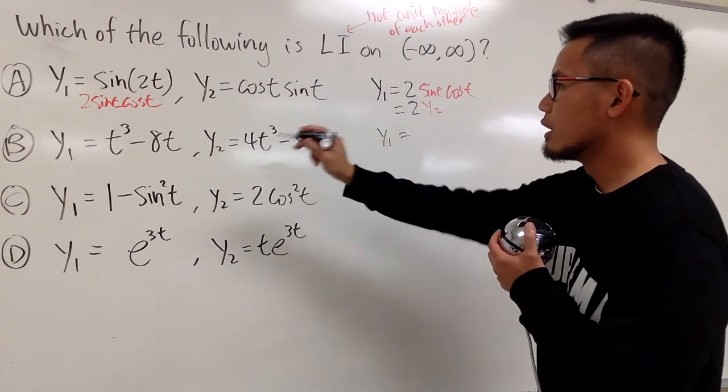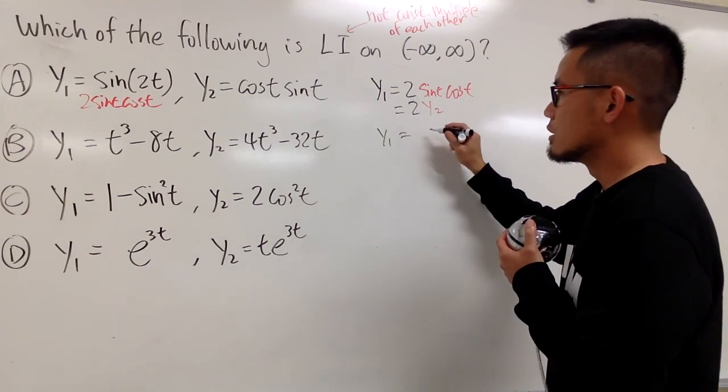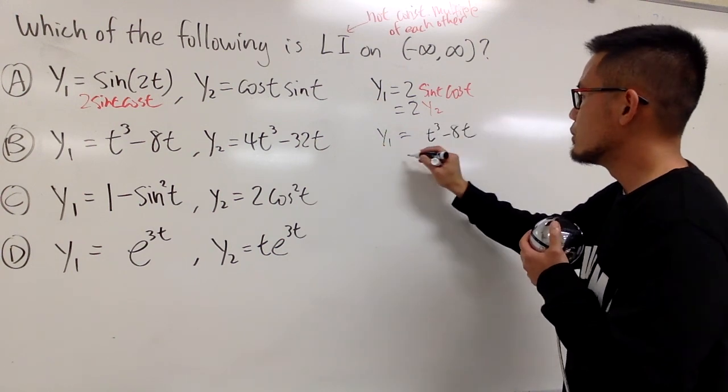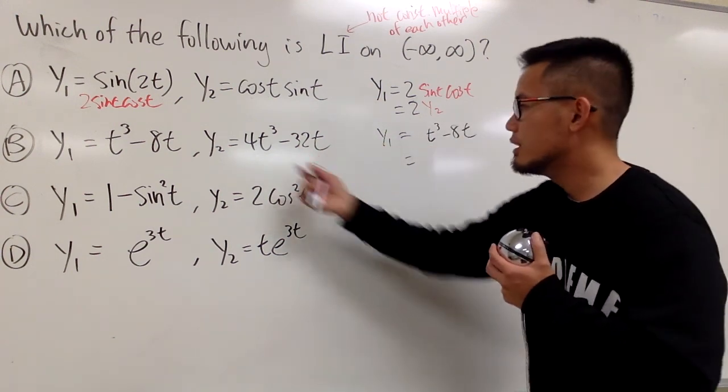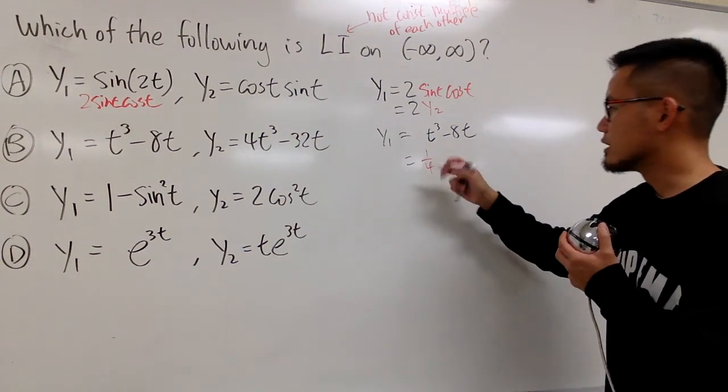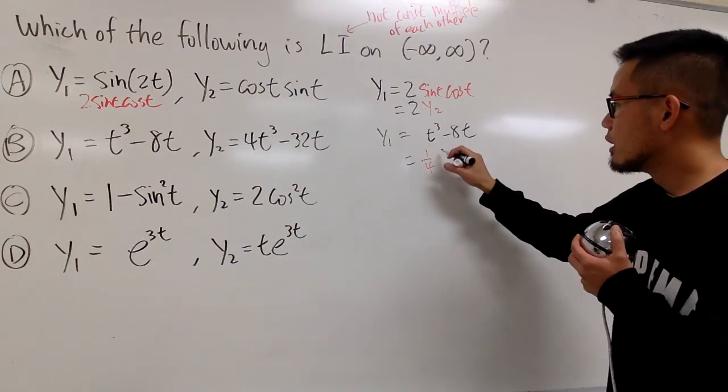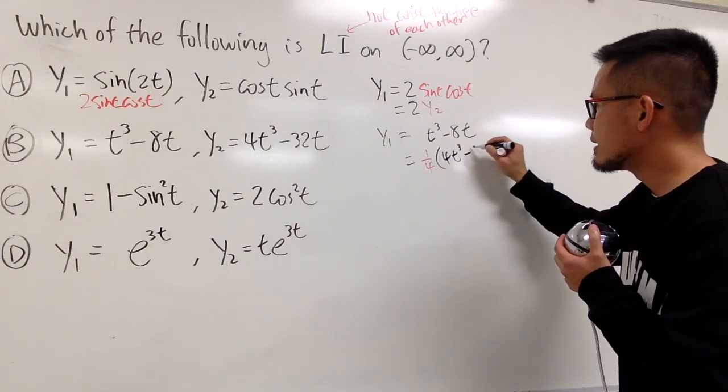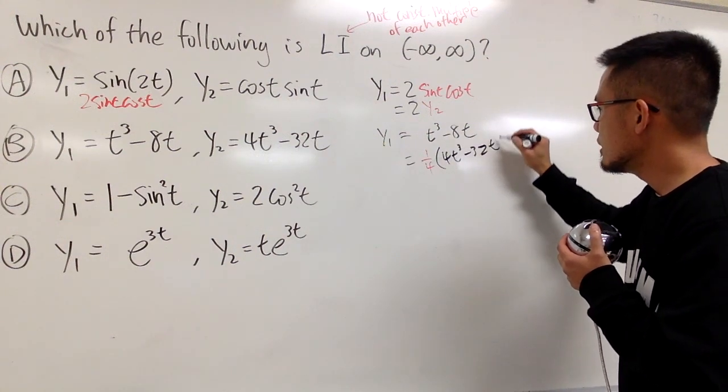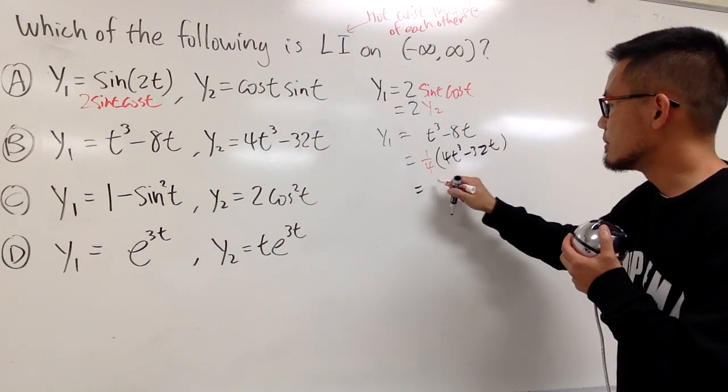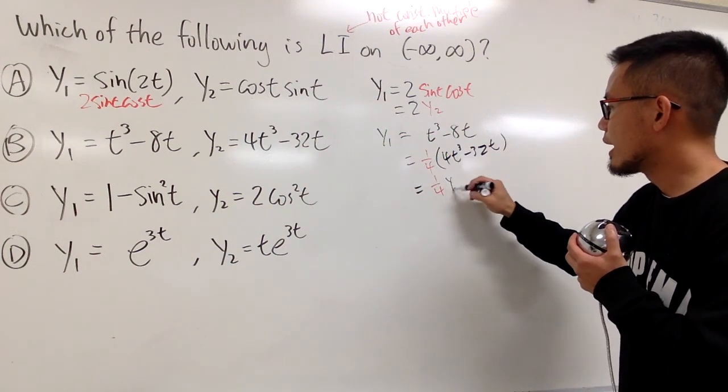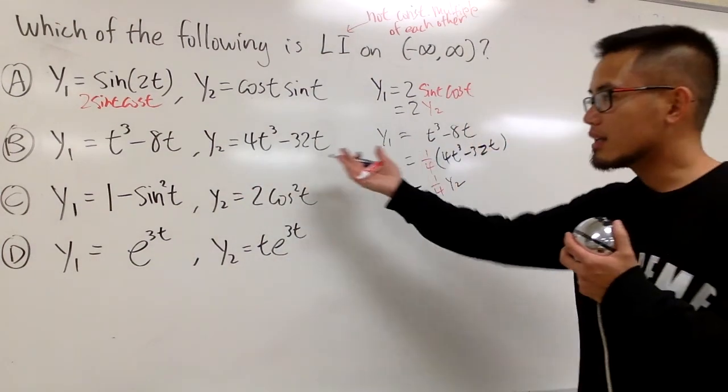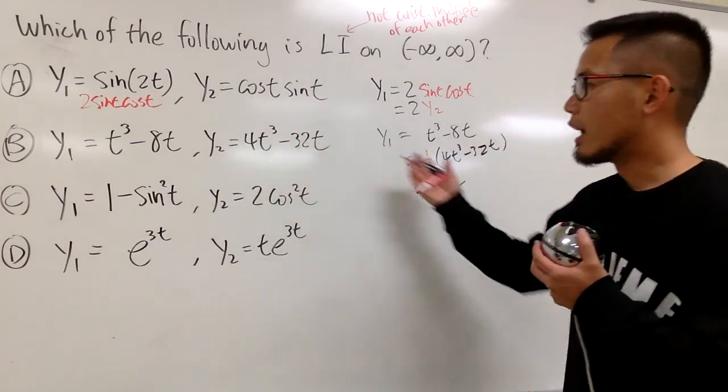y1 equals t cubed minus 8t, which is the same as saying I can divide it by 4, which is the same as multiply by 1 over 4. So 4t cubed minus 32t, and this is the same as saying 1 over 4 times y2. So once again, for choice B, they are constant multiples of each other, so they are LD.